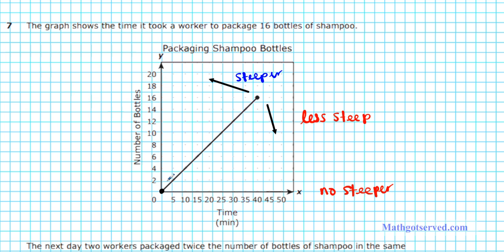In this situation, the number of bottles packaged doubles for every time interval. So for the new line: at 5 minutes instead of 2 we have 4; at 10 minutes instead of 4 we have 8; at 15 minutes instead of 6 we have 12. Let's go ahead and graph our new line — it's going to look something like this. Let's connect the dots for the new line.